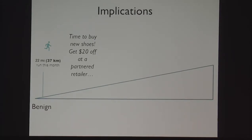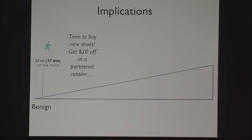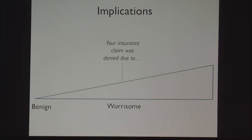If you think about it, the implications are benign if somebody just uses this information for marketing purposes. Google sees that I ran 22 miles this month and added up over time — maybe it's time to buy new shoes and they want to give me $20 off at a partnered retailer. That's maybe okay. It might be more worrisome if your insurance company decides to deny a claim because they know you were speeding right before an accident.